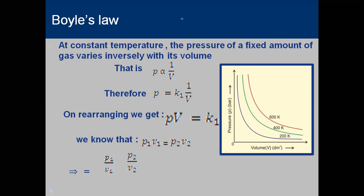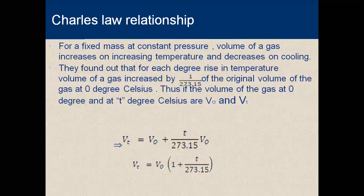This type of process is known as an isotherm. 'Iso' means constant and 'therm' means temperature, so when we take temperature as constant, the process is called isothermal. Boyle's Law explains the pressure-volume relationship: pressure is inversely proportional to volume — increase pressure, volume decreases; decrease pressure, volume increases.